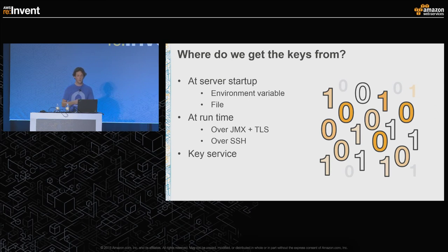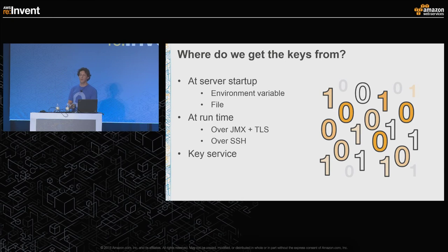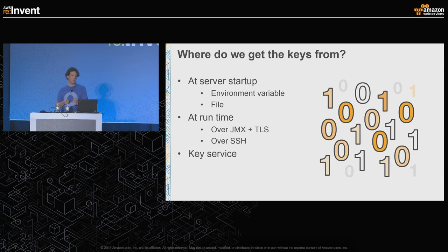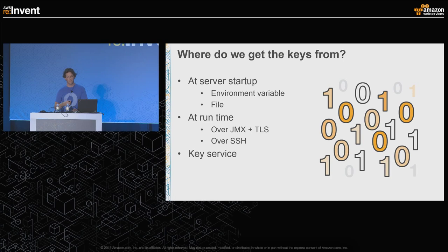Following the least privilege principle, there's no reason that anyone who has access to the database needs to have the plain text version of that data, both at rest and in memory. That means we're going to be doing the encryption in our service and then storing cipher text in the database. The problem with this, of course, is how do you get that key onto that service? Naively we might use server boot-up and put it into an environment variable with some config management system or into a file — most people know why that's not a good idea.